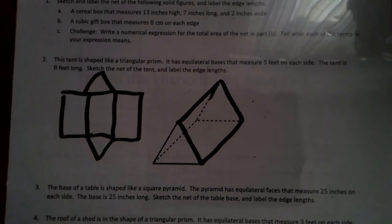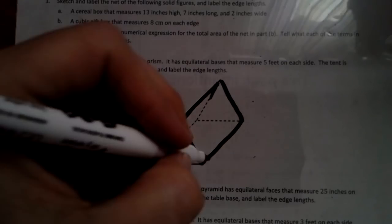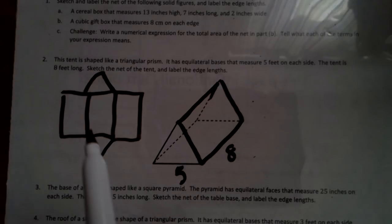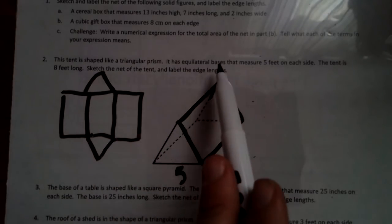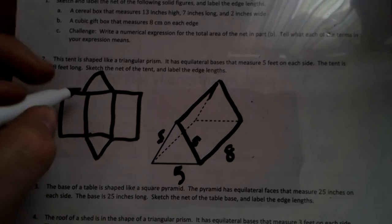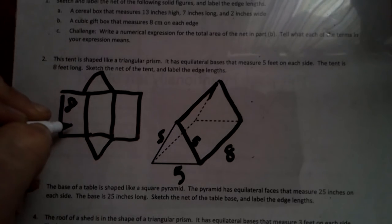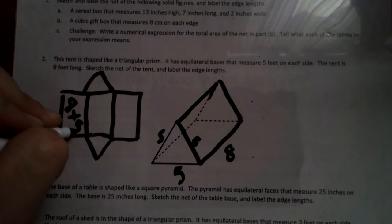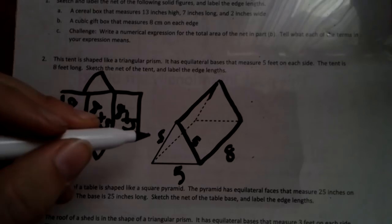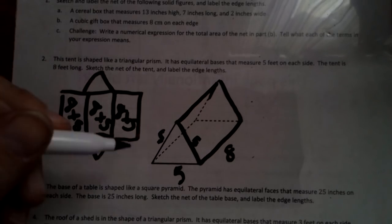It says that the base measures five feet on each side. The tent is eight feet long. So we've got this base being five. We've got eight. And it's an equilateral base, which means this is five, five, and five. So each of these are going to be eight by fives, eight by fives, eight by fives. And these are going to be your triangles.